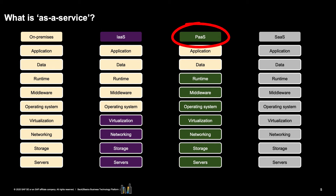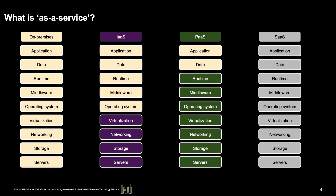Platform as a Service, or PaaS — also called application platform as a service — is a category of cloud computing services that provides a platform allowing customers to develop, run, and manage applications without the complexity of building and maintaining the infrastructure typically associated with developing and launching an application. In PaaS, the consumer controls software development with minimal configuration options, and the provider supplies the networks, servers, storage, operating systems, database, and other services to host the consumer's application.